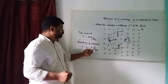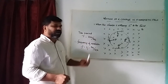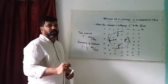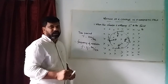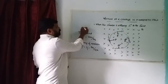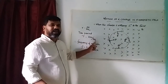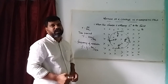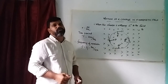That is the frequency of the revolution. If we see that frequency f equals 1 divided by T, then f equals BQ divided by 2 pi m. So the three equations are: radius R equals mv by BQ, time period T equals 2 pi m by BQ, and frequency f equals BQ by 2 pi m. You will be able to use these for exam problems.